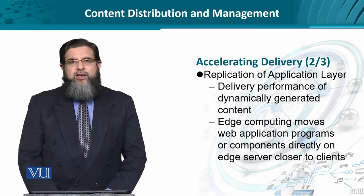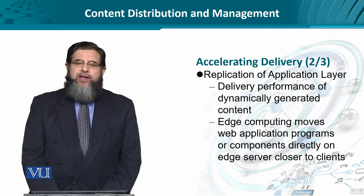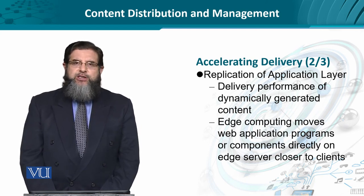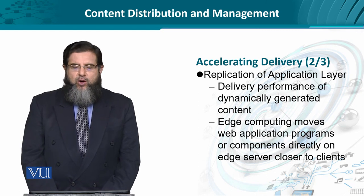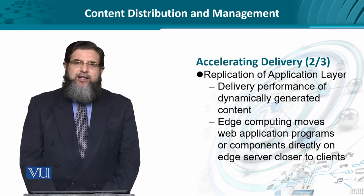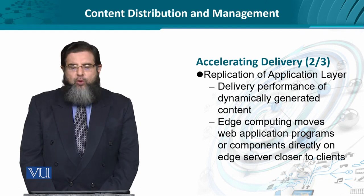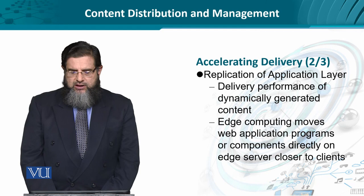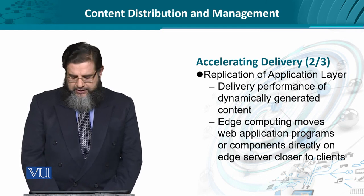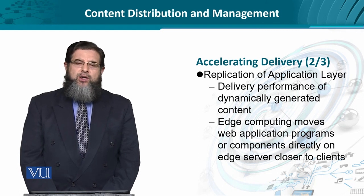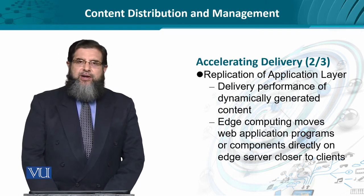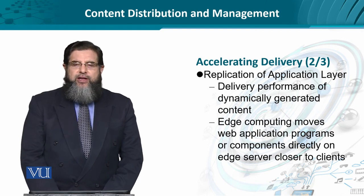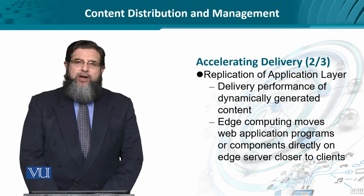We can also think about the replication of the application layer. Replication of the application layer is more like an active engine replication. We can think about the dynamically generated content being generated at the application layer. If that has to be replicated, we can think about it as edge computing, because it moves the web application programs and components onto edge servers which are closer to the clients. Here we make use of our understanding of cloud infrastructure — platform as a service, software as a service, etc.